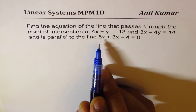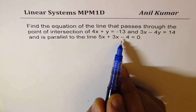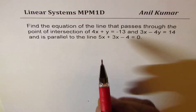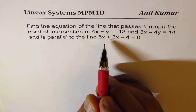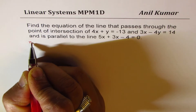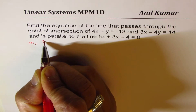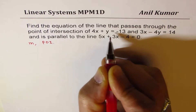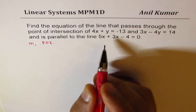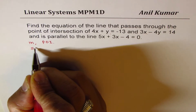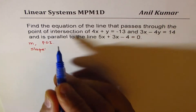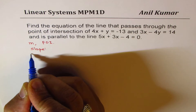to the line 5x + 3y - 4 = 0. In such problems, to find the equation we have to find two things: first is the slope m, and second is the point of intersection from these two lines. So let's begin by finding the slope.